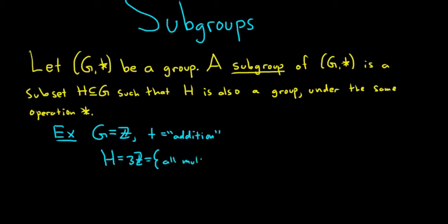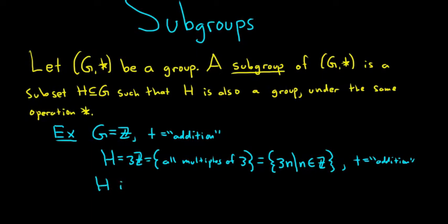And this is the set of all multiples of 3. So we can write this more precisely as the set containing 3 times n, such that n is an integer. And the operation here will be the same, so addition. So this is a subset of G, and it's also a subgroup. So H is a subgroup of G. Likewise, you can look at 5ℤ, 2ℤ, etc.